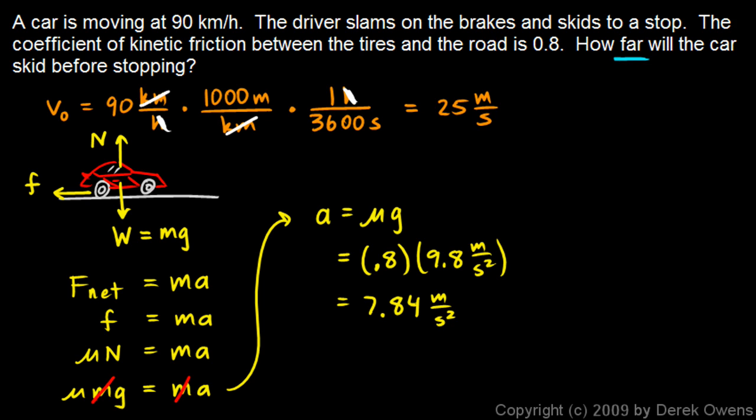And now I can calculate the distance. I don't have the time that it takes to stop. I just have the initial and final velocity and the acceleration. And this equation will work. V squared is V0 squared plus 2a delta x. And I'll just do the algebra to solve that for delta x. Delta x ends up being V squared minus V0 squared over 2a. And so, let's put in the numbers.